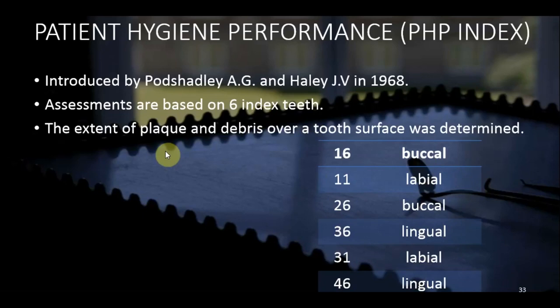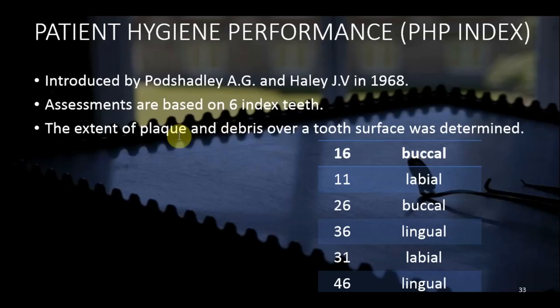PHP Index is a plaque and debris index. We check plaque and debris, whereas in OHI-S we checked debris and calculus. Here, instead of calculus, we check plaque. Debris is a loosely arranged collection of food particles, mucins, or bacteria, while plaque is a very tenacious, adherent deposit on hard surfaces.